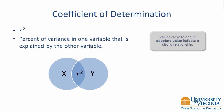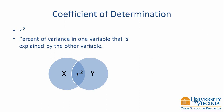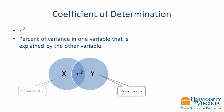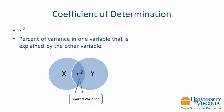With correlation, values close to 1 indicate a strong relationship. However, we can also square the correlation coefficient to get the coefficient of determination, which helps us understand the strength of the relationship. The coefficient of determination tells us the percent of variance in one variable that is explained by the other variable. To illustrate this, I have drawn a Venn diagram where the left circle represents the variance of x, the right circle represents the variance of y, and the overlapping area is the shared variance, or r squared.